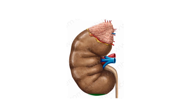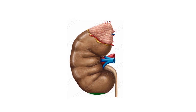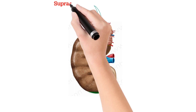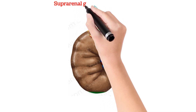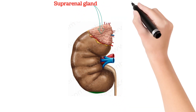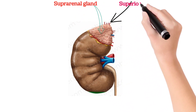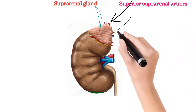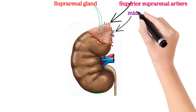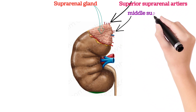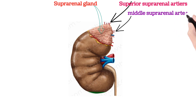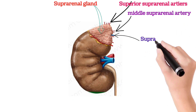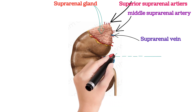The kidneys are positioned in the retroperitoneal space at the level of vertebrae T12 to L3. They have a bean-like morphology with two poles — superior and inferior — and two borders — medial and lateral. Located at the superior pole is the suprarenal gland. The medial border of the kidney is defined by the hilum of the kidney.